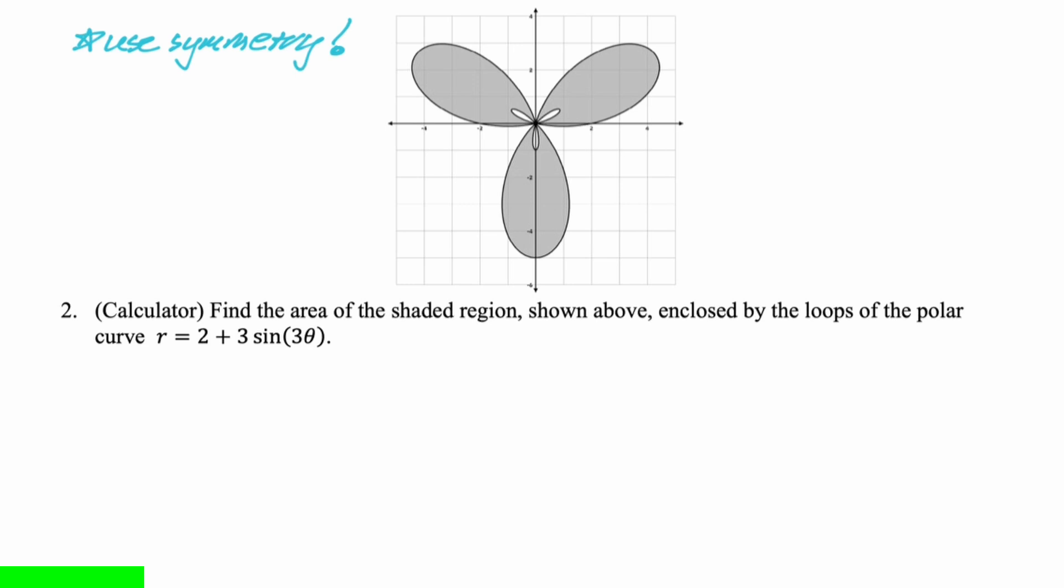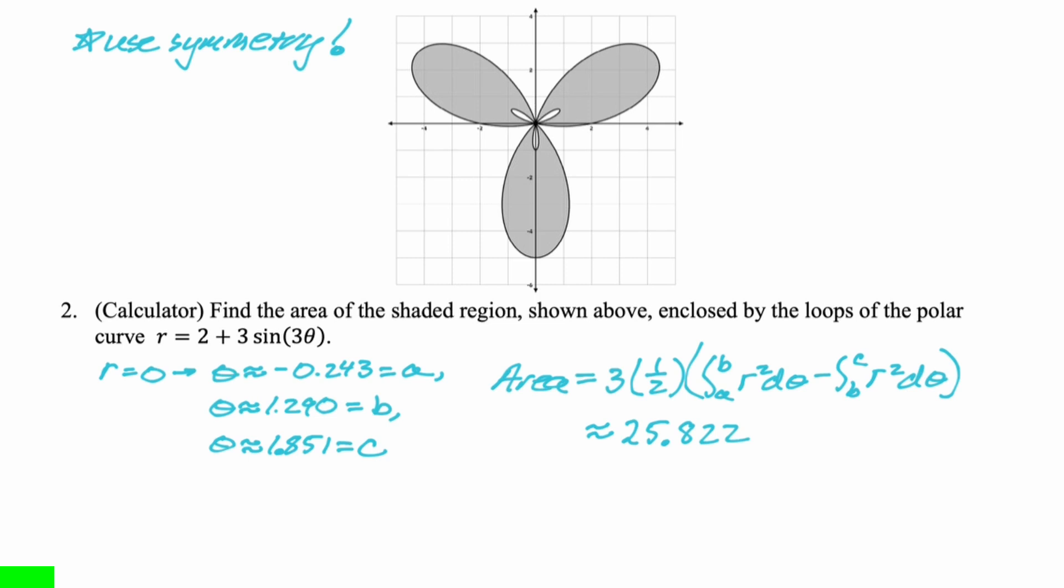Okay. So what we did was we found where R equals zero by graphing. So that gave us these values, which I stored as A, B, and C. Then we set up our integral. We did three of them. We did one region and then tripled it. There's always a one-half when you're doing polar. And then what I'm going to do, I did the integral from A to B of R squared d theta minus the integral from B to C of R squared d theta. And our approximate answer, 25.822. That's a good polar problem. You might run into that.